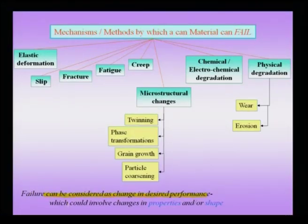It is important to start with a broad overview of mechanisms by which a material can fail. This can be mechanisms which are physical, electrochemical, or of other origins. In this context, failure has been defined as a change in the desired performance which could involve changes in properties and/or shape. For example, if there is a component like a gear wheel meshing into a system with other gears, a change in the shape of the gear automatically constitutes failure.